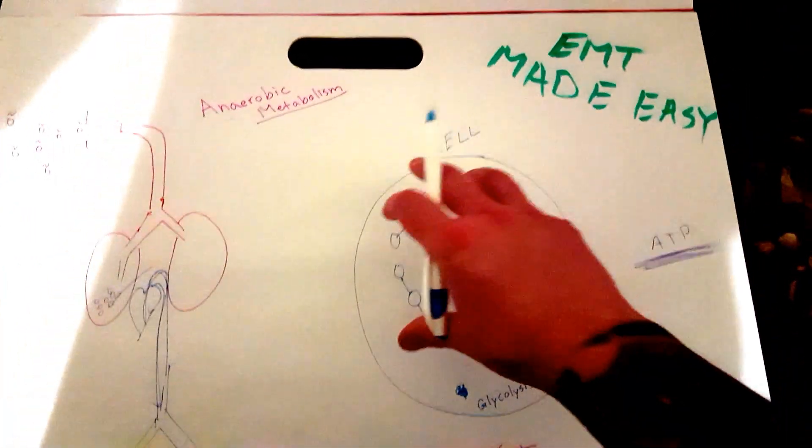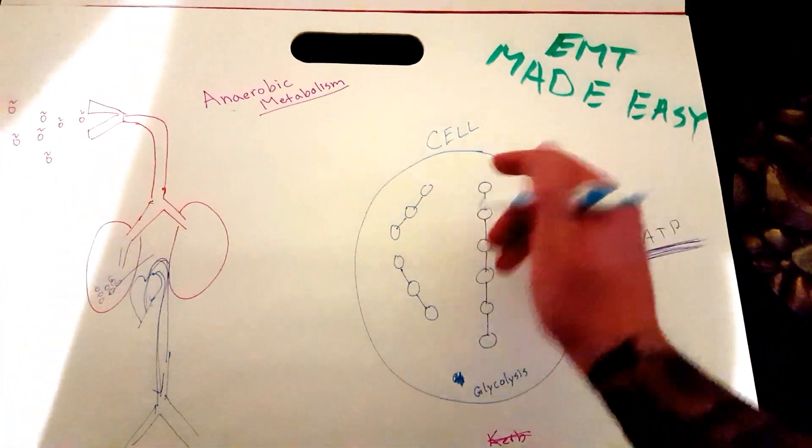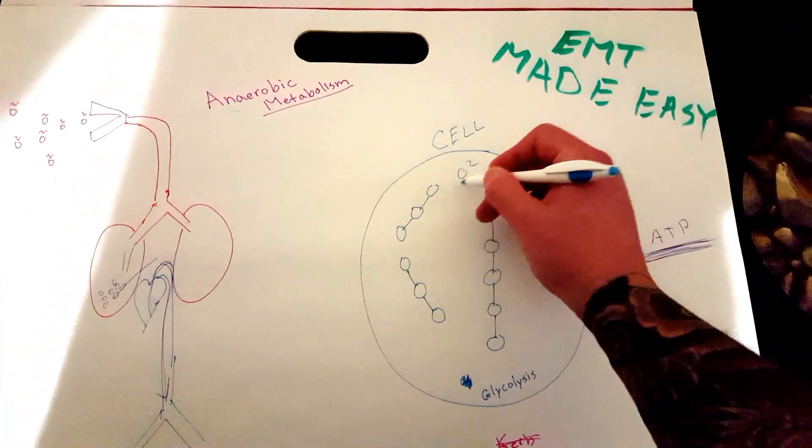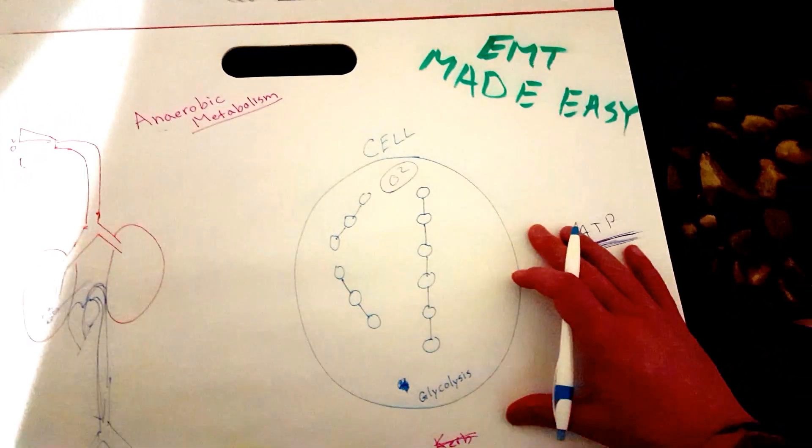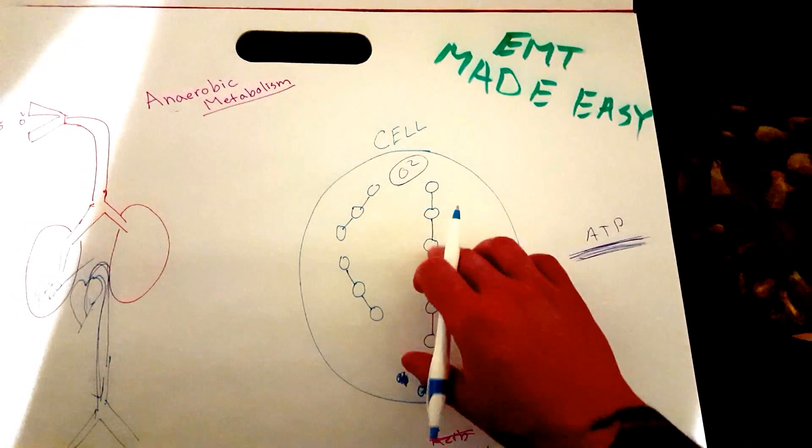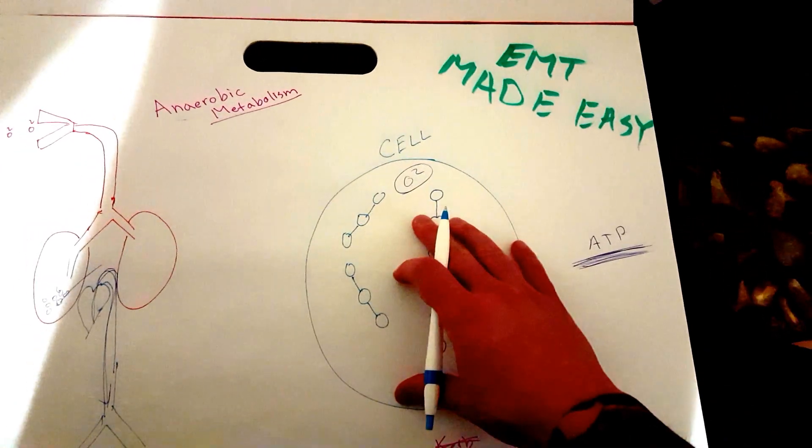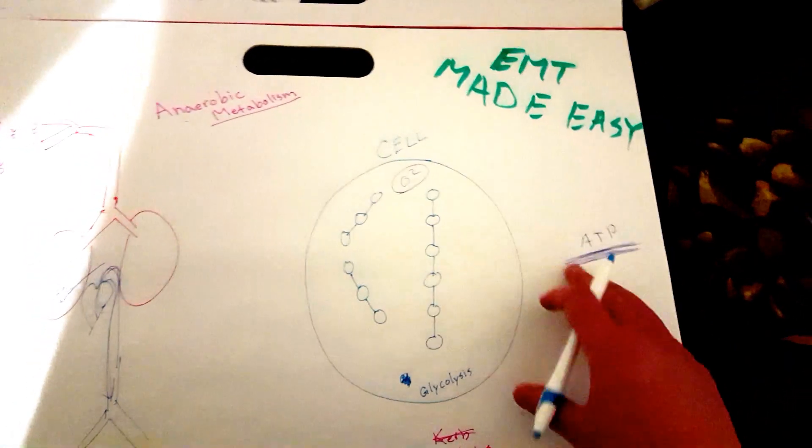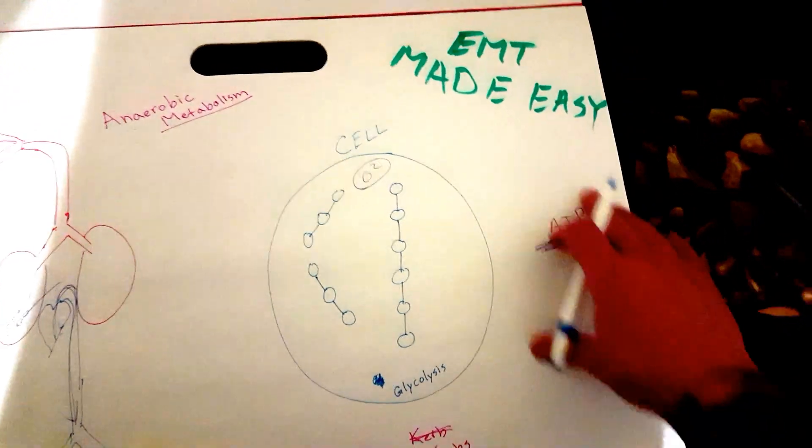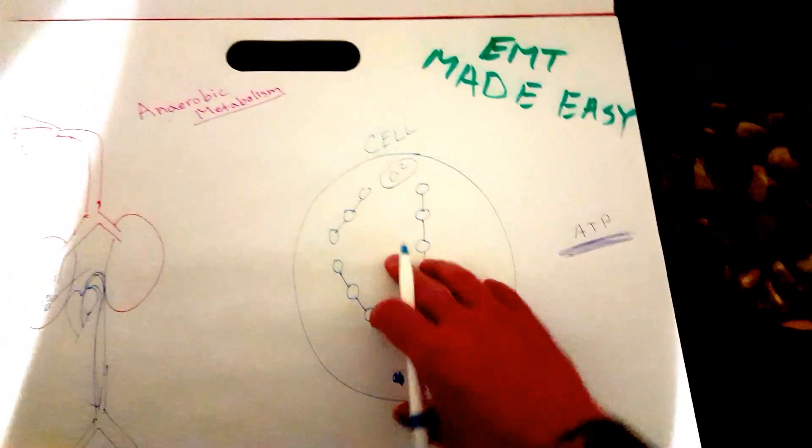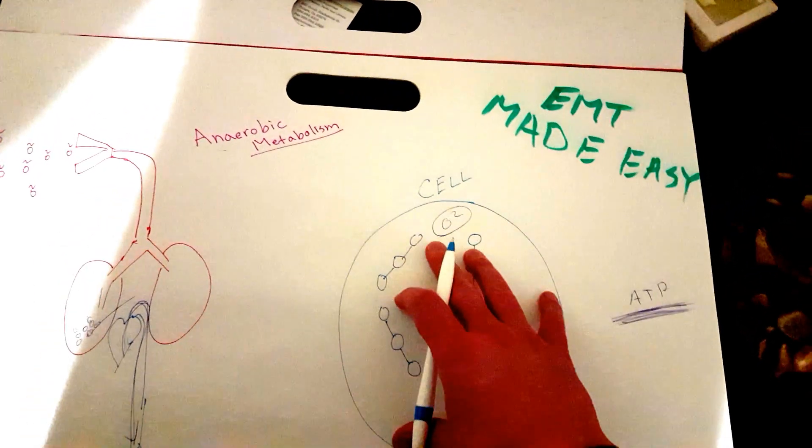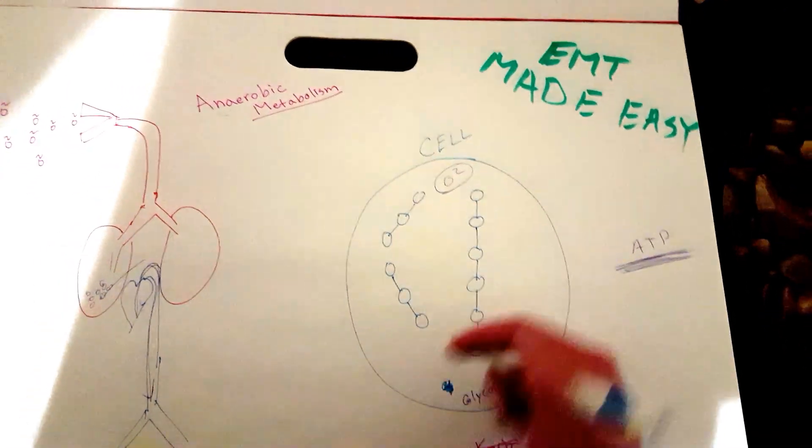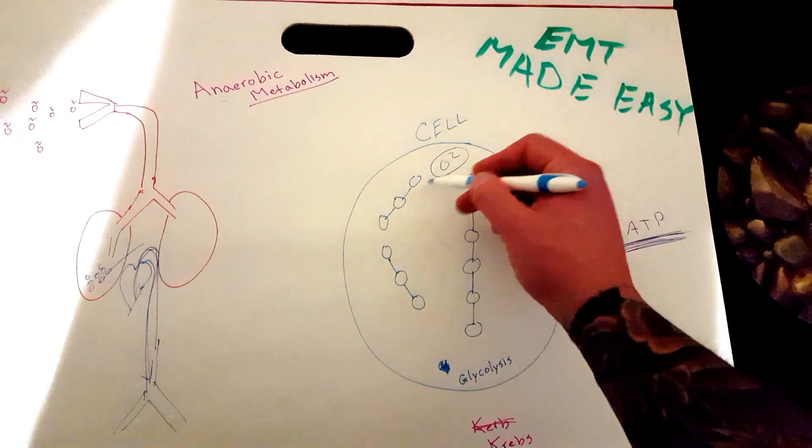The O2 that came in will eventually make its way to the cells of the body where it will meet glucose. Glucose is originally a six carbon molecule that goes into the cell, and then ATP is made efficiently. A lot of it is made with O2 and glucose—that's what's called aerobic metabolism.